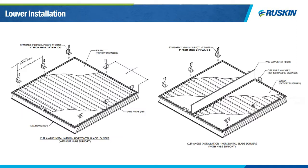Now let's talk about how louvers are going to be installed. Here you see one of the most basic installations, which probably applies to 80 to 90 percent of your applications. You see two single-section louvers — one without any blade support and one with a hidden vertical blade support to accommodate its size or wind load. Typically you'll use a 2-inch by 2-inch by quarter-inch thick by 2-inch long clip angle, mounted 4 inches from the ends of your louver and then a maximum of 24 inches on center for the remaining assemblies.